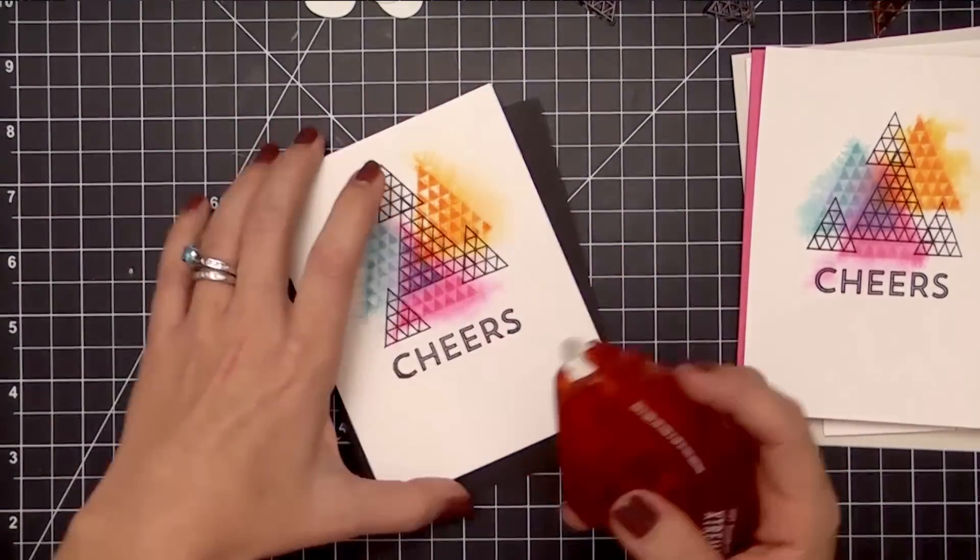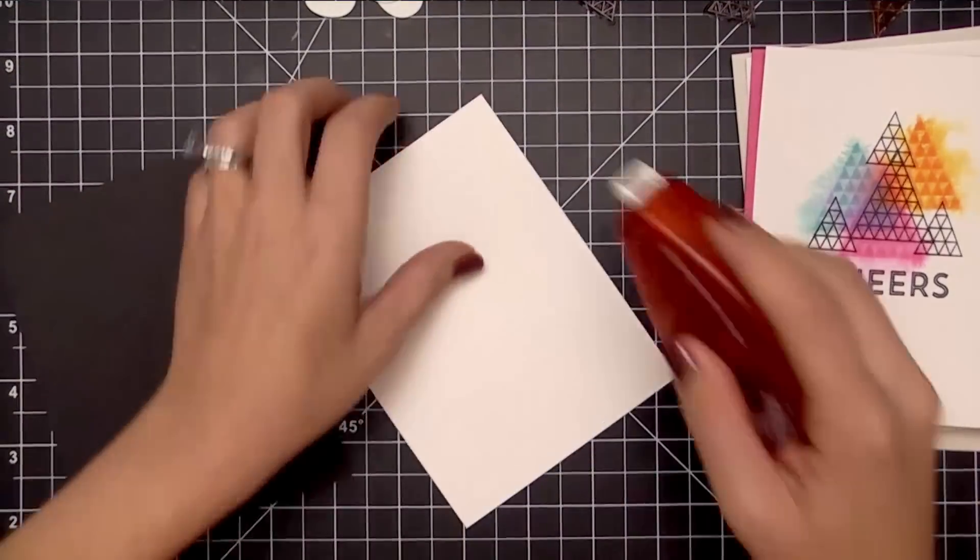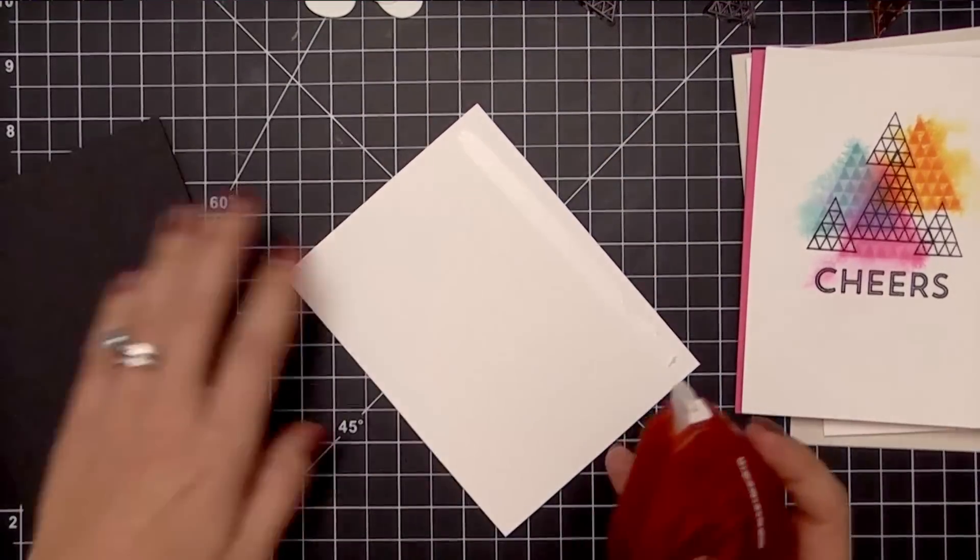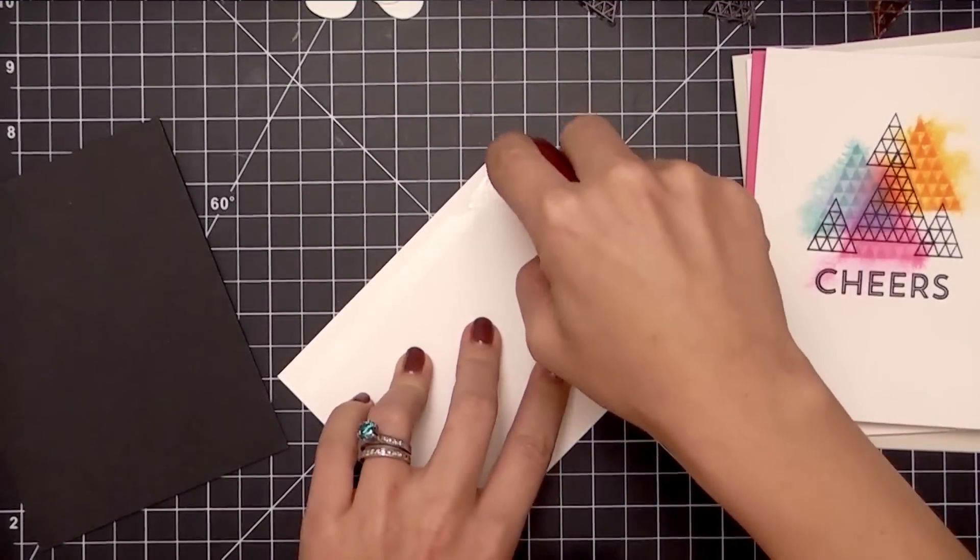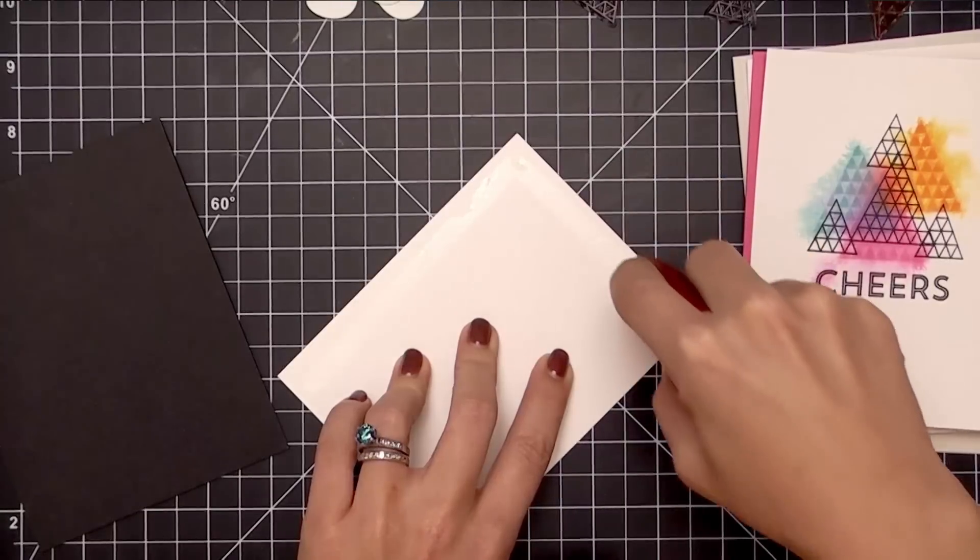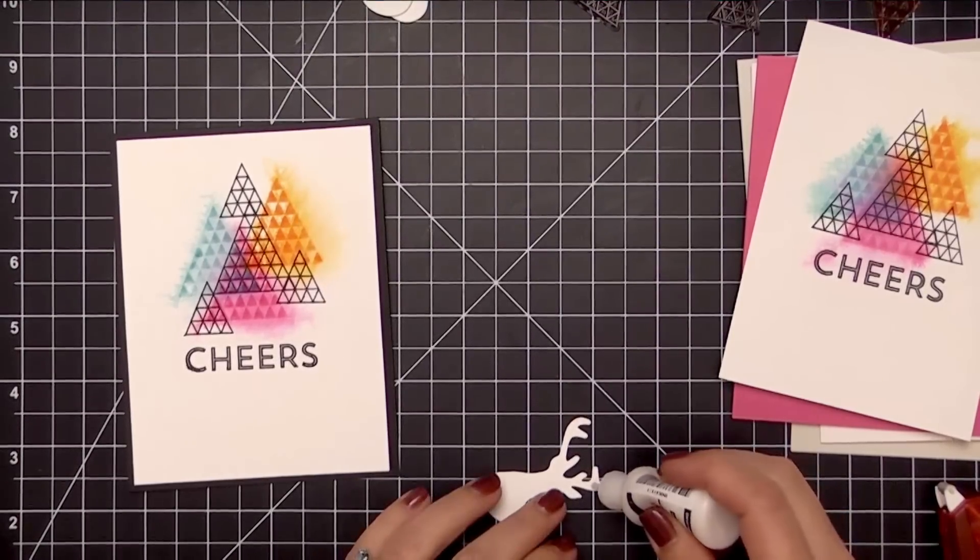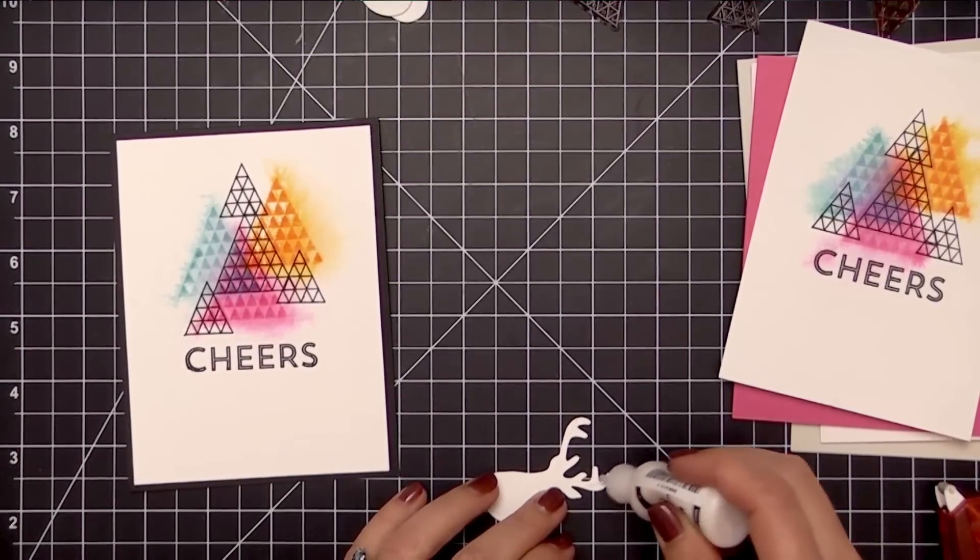I want to keep these nice and flat, so I'm going to use the Tombow Extreme tape runner to adhere these watercolor panels to their card bases. This is an extremely permanent strong adhesive, perfect for using just in case your panels may have warped at all.